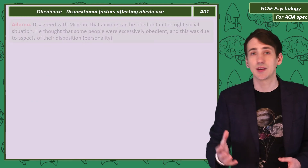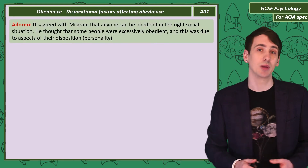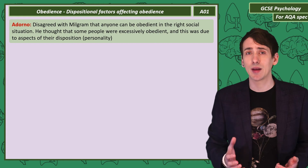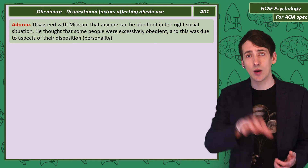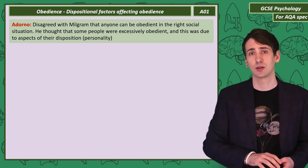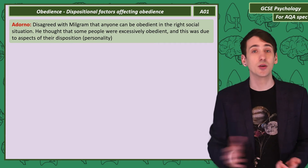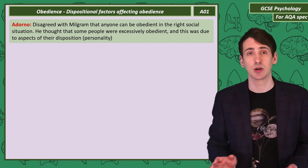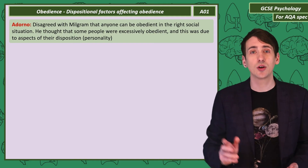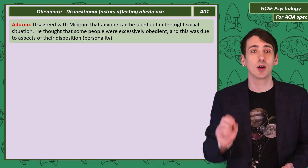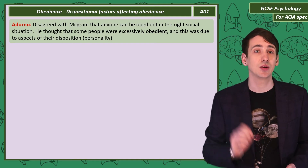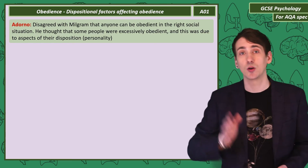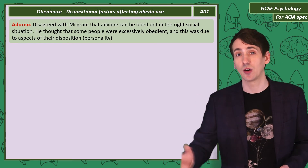Milgram suggested that all of us could be obedient, and whether we were obedient or not depended on situational factors. But another theorist at that time, Adorno, disagreed with Milgram. Adorno thought that there were personality differences between people who were obedient and people who would resist authority.